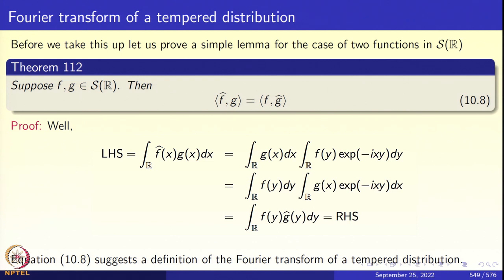Now, f and g were in the Schwarz space. Look at equation 10.8. What we are going to do is take the right-hand side as the definition. What if f is not in the Schwarz space? What if f happens to be in S-prime of R? What if f happens to be a tempered distribution? The right-hand side of 10.8 would make perfect sense, because f is a tempered distribution and g was in the Schwarz class, so g-hat is also in the Schwarz class. So u paired with g-hat in triangular brackets makes perfect sense.